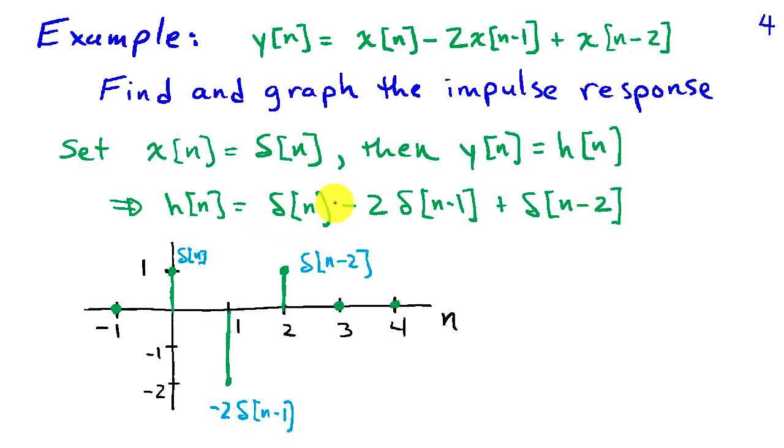The impulse delta of n is this term labeled delta of n, and has unit amplitude at n equals 0. Then minus 2 delta of n minus 1 is this term at n equals 1 of amplitude minus 2. And then the term delta of n minus 2 has amplitude 1 and is located at time n equals 2. And everywhere else, we have 0.